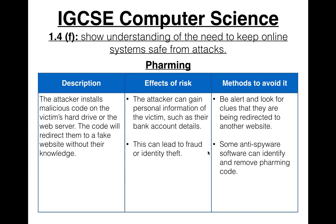To avoid confusing phishing and pharming, think of it like the real-world equivalents. With fishing, you cast a rod with bait — the bait is the email, and the fish (the victim) can choose whether or not to take it. With farming, you plant seeds in the ground — in the cyber sense, you're planting malicious code on the computer.